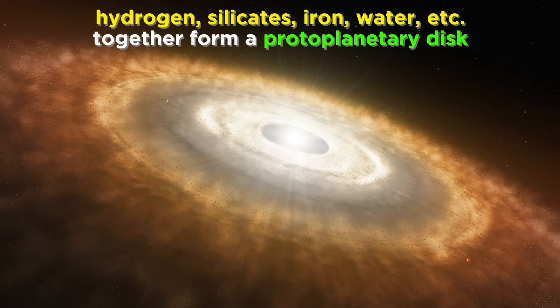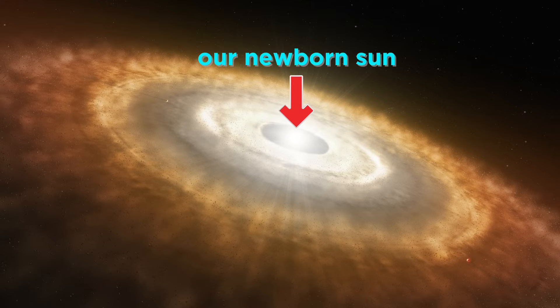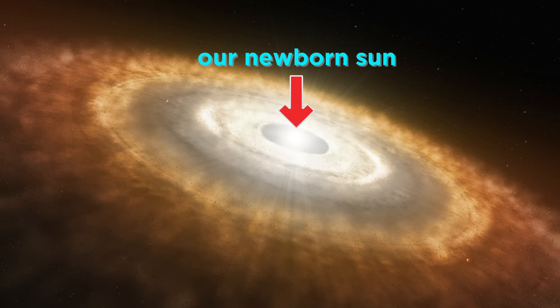This cloud, with all of its hydrogen, as well as silicates, iron, water, and other substances, began to spin and flatten into a disk, just like galaxies do, but in this case we call it a protoplanetary disk. The bulk of this cloud came together at the center, gravity squeezing with such force that fusion began, powering the newly formed sun.